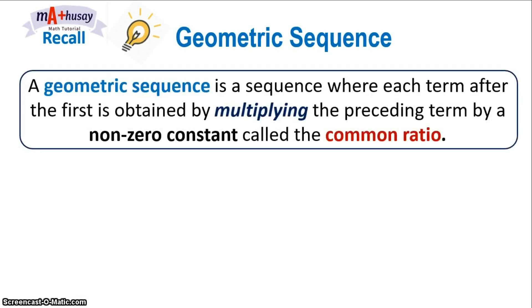We know that a geometric sequence is a sequence where each term after the first is obtained by multiplying the preceding terms by a non-zero constant called the common ratio.